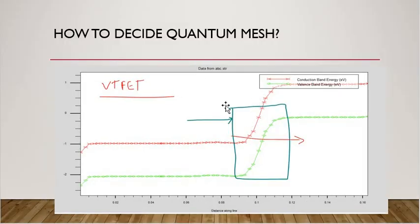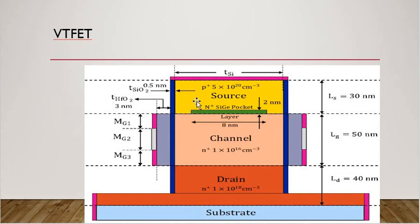As shown in the slide, for y I add the quantum mesh at the location identified from the band plot, and for x I already know that tunneling is occurring across the full channel region. Because I make a vertical cut line for a vertical T-FET, the tunneling is occurring in that region when the bands come near to each other.